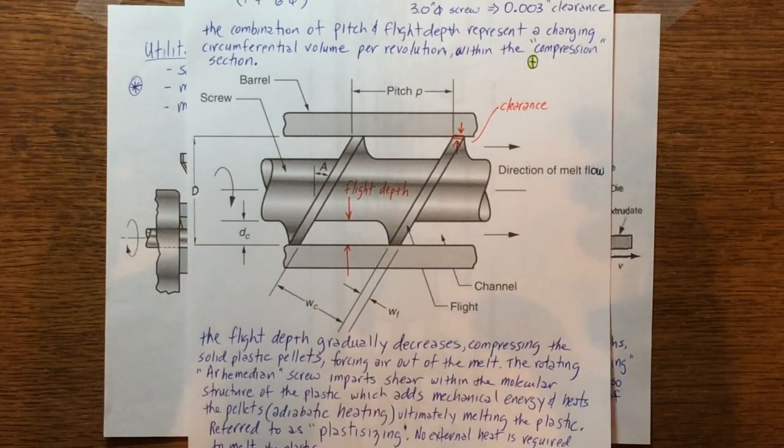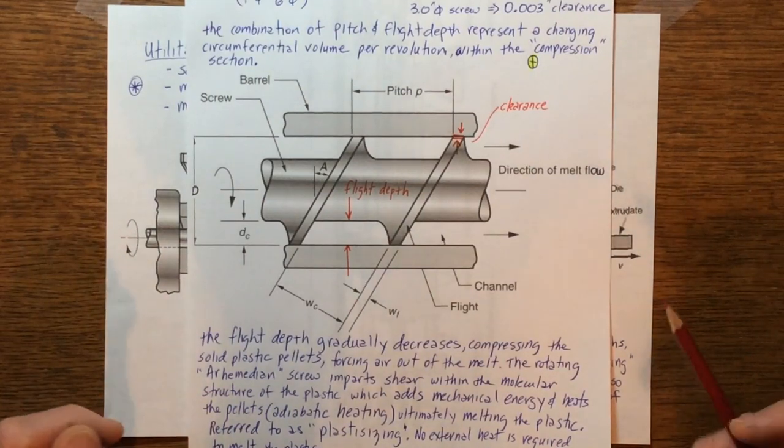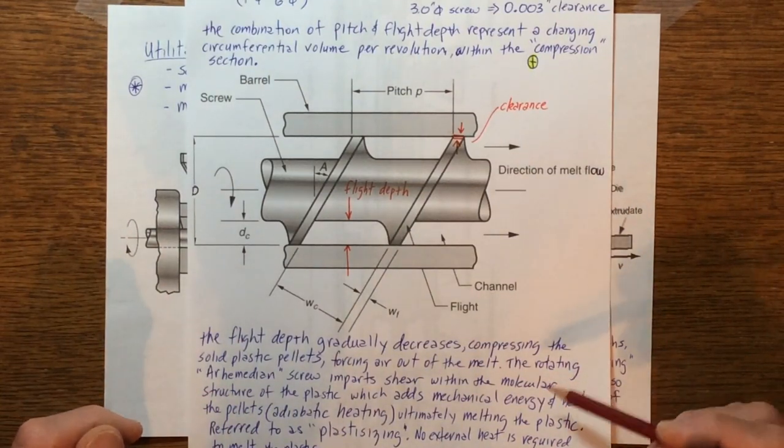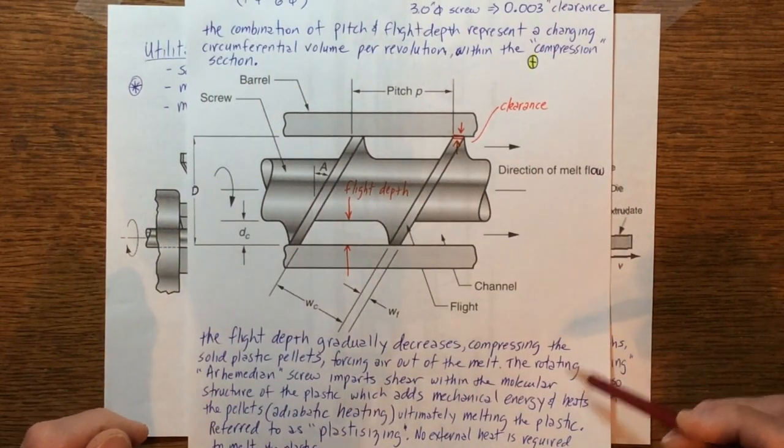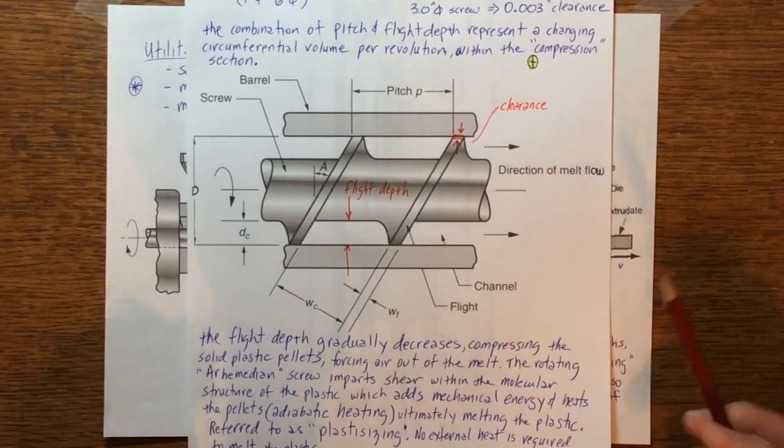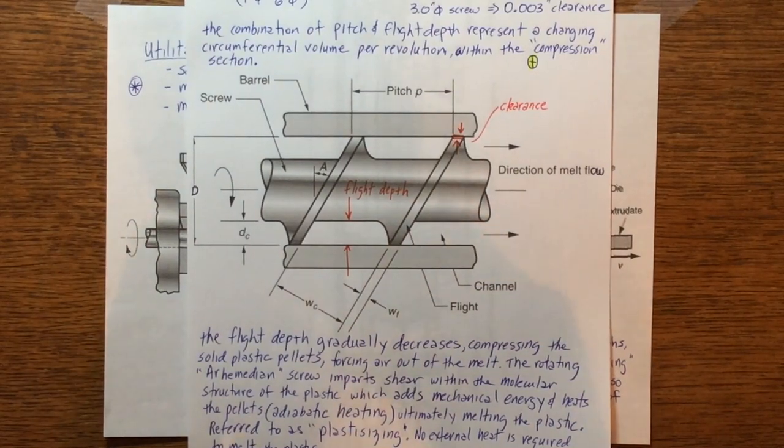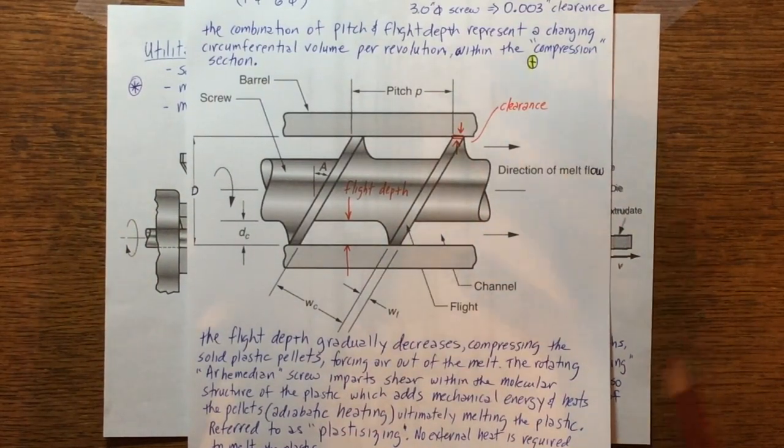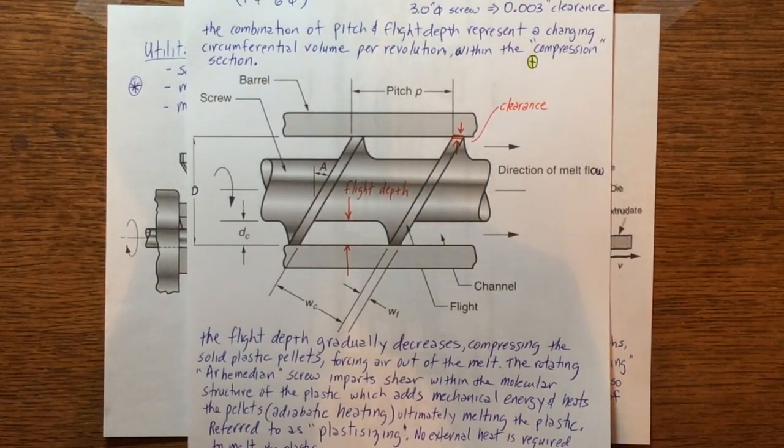The flight depth obviously is gradually decreasing and compressing those solid pellets. Of course there's a certain amount of volume, there's a lot of air in there, and so as it decreases the air is forced out of the melting process.